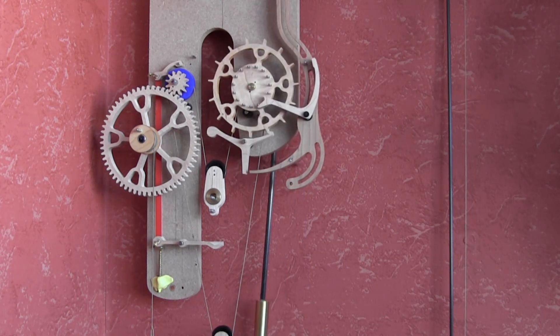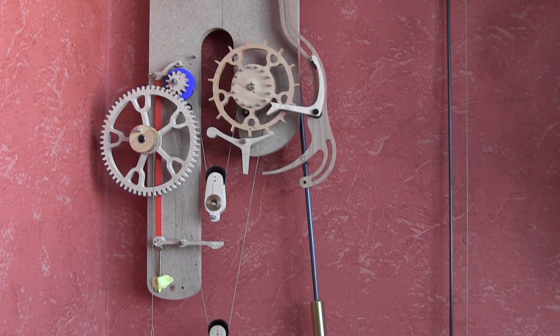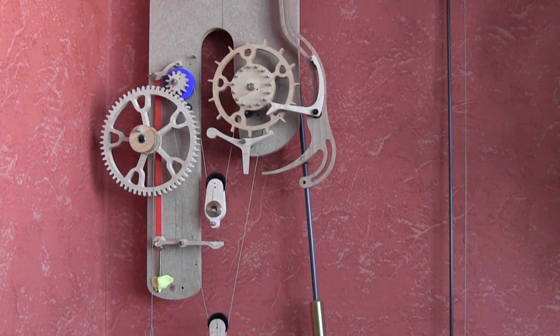This first design uses a cord wrapped around the last gear in the train and then around the escapement. In between we have suspended the escapement weight and the tension weight.